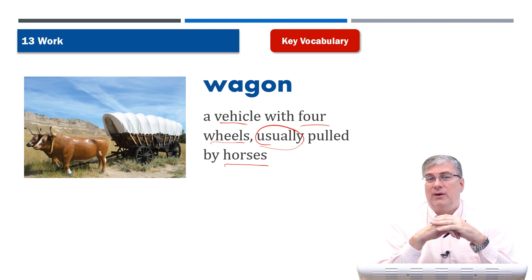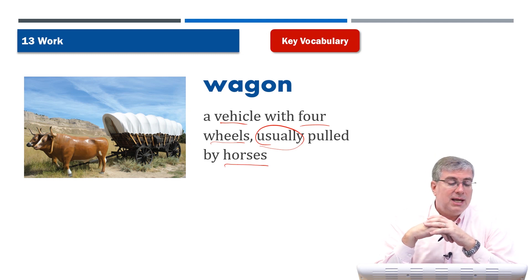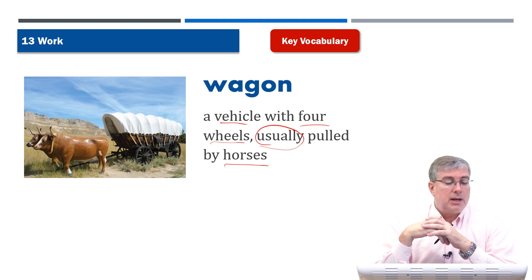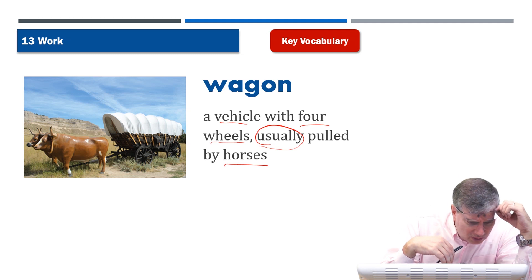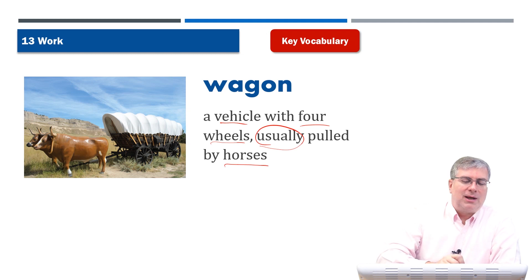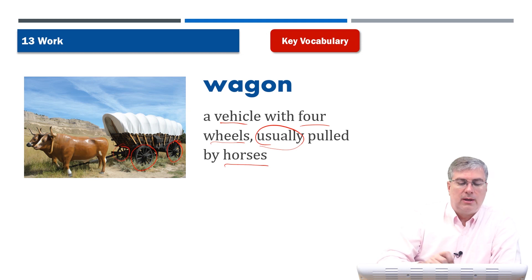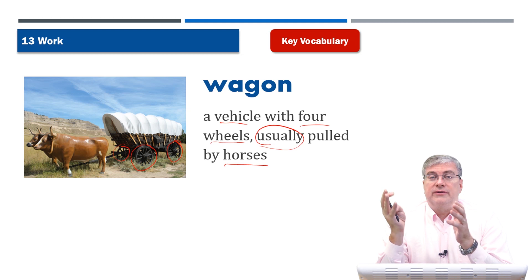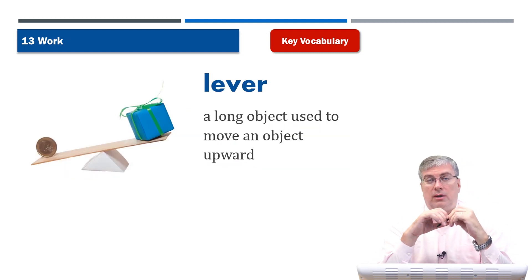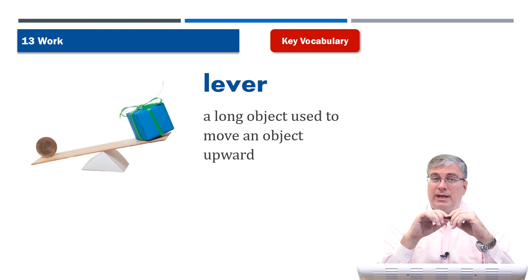Many different animals were used for their pulling power before the invention of the machine. In this case we have a couple of oxen — and of course horses are used as well. Actually looking at this picture more closely, the oxen aren't real — the ox's back is very shiny! Anyway, what we're looking at is a wagon. The wheels are here and of course there are four — you can't see the fourth wheel. A wagon is very useful for putting stuff in and moving it from one place to another. It makes work easier.